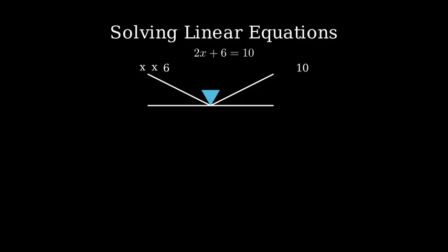To solve for x, we need to isolate the variable. First, let's subtract 6 from both sides of the equation. Remember, whatever we do to one side, we must do to the other side to keep the equation balanced. Now that we have 2x equals 4,